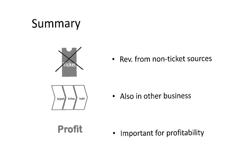As a summary: ancillary revenue is revenue generated from non-ticket sources. It is not only applicable to the airline business but also to many other businesses such as hotels and car rentals, and it is very important for profitability, as we saw in the example of EasyJet. Thank you very much for listening.